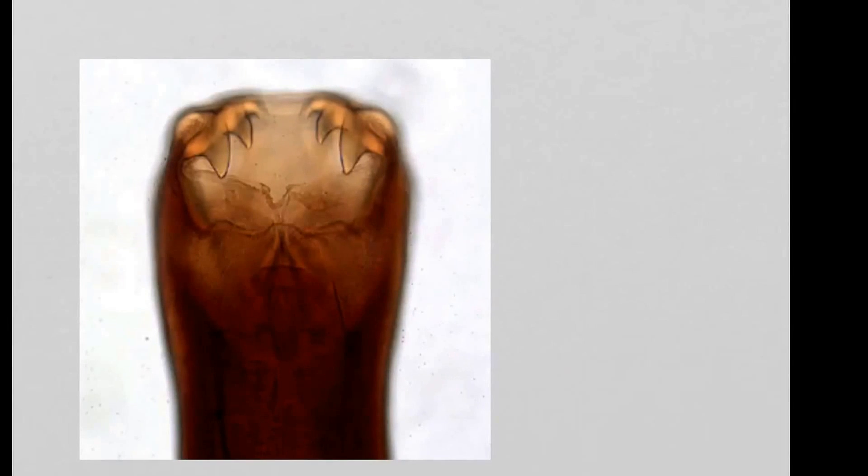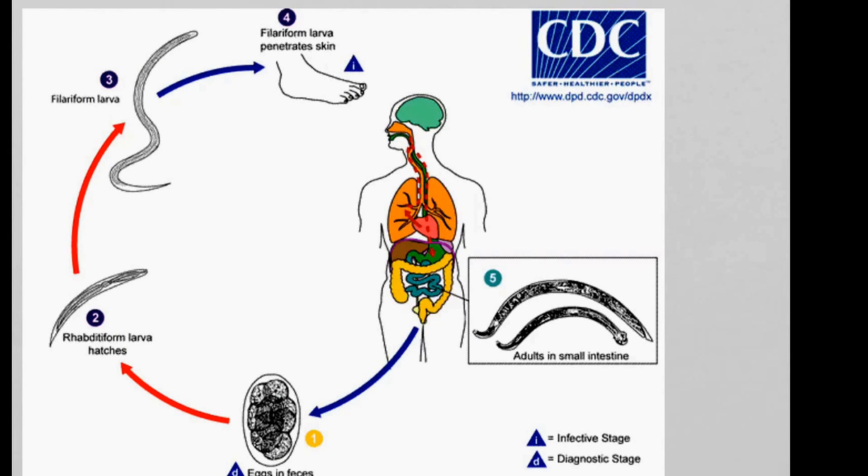So how do hookworms actually, what is the life cycle of a hookworm? Now, it usually starts with eggs, which are produced from adult hookworms. So these eggs are cleared from the body in the feces. So when people go for a poo, very often you'll find the eggs in the stool, in the feces.